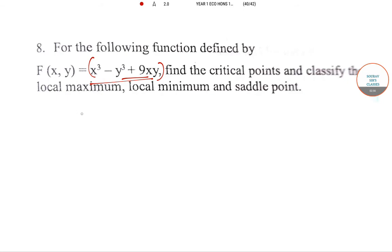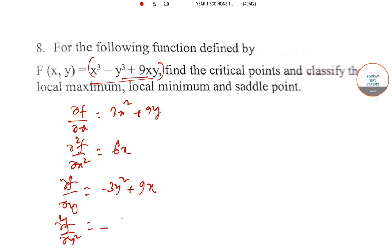So here also you have to do some derivatives. First is ∂F/∂x: that is 3x² + 9y. ∂²F/∂x² is 6x. ∂F/∂y is -3y² + 9x. And ∂²F/∂y² is -6y.